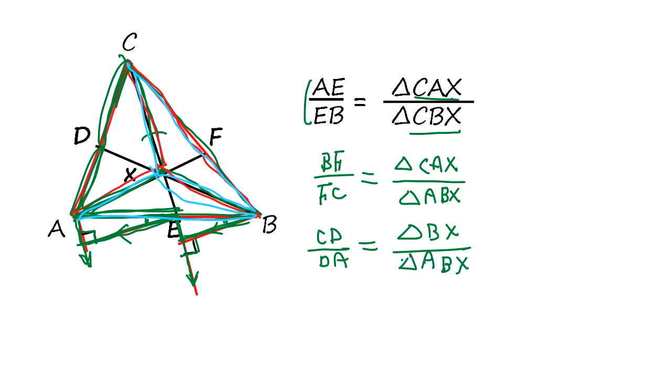So we multiply these three ratios together. This CBX, we multiply this together, this is going to cancel out.